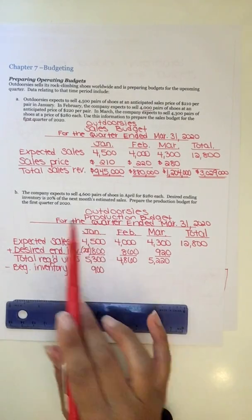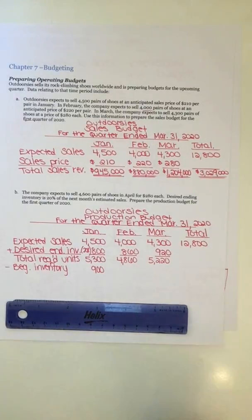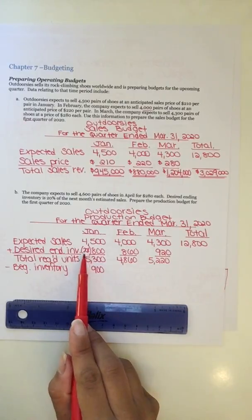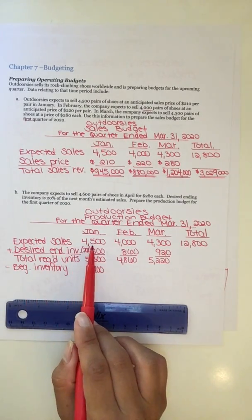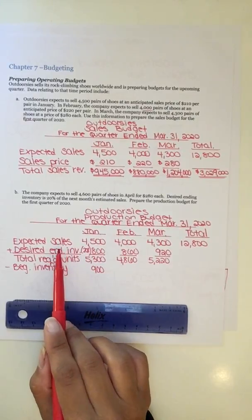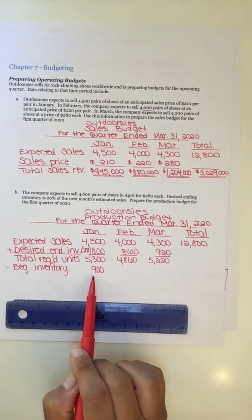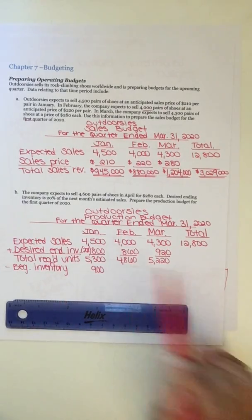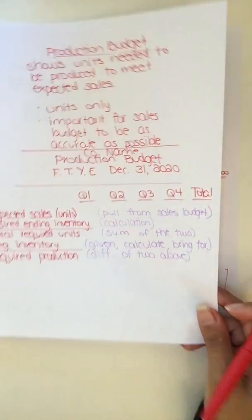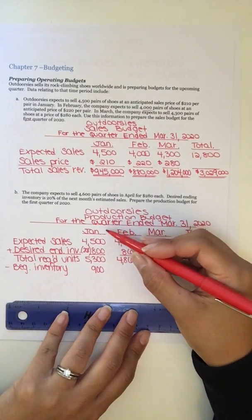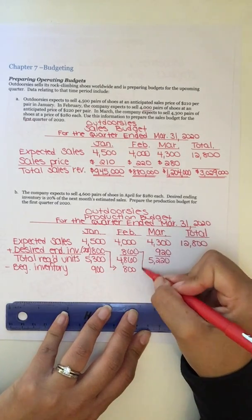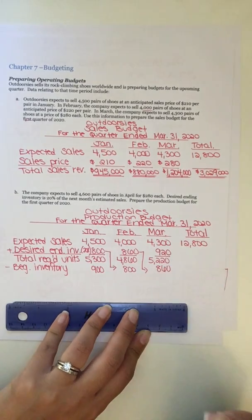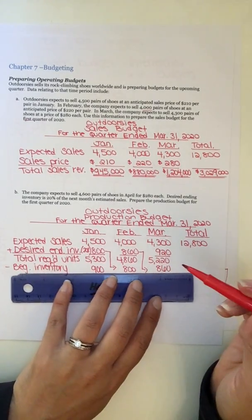Okay, so again, if they don't give it to you, sometimes they'll say January started off with 900 units. Great, if they give it to you. If not, you have to make the assumption that they're always continuing with this 20% goal. So that means they ended December with 20% of the next month, which was January. If they ended it in December, that's your beginning for January. Okay, alright, the rest of these we're just going to bring forward. Okay, bring forward. So what I mean is if we end January with 800, that's what we start February with. If we end February with 860, that's what we start March with. Okay, easy peasy.